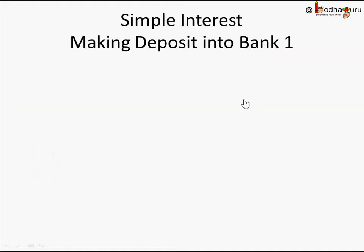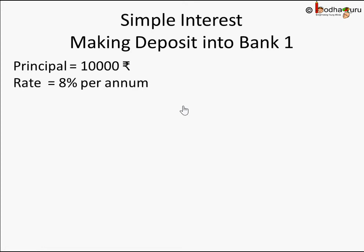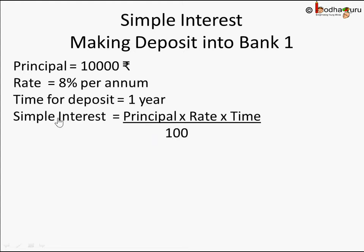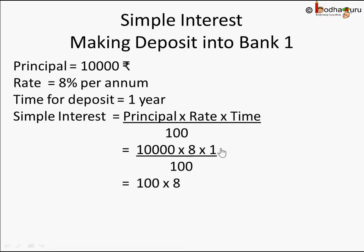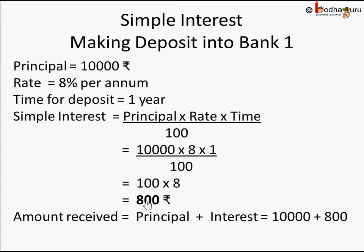Let's find out how much money Sukram gets from Bank 1. The principal is 10,000, the rate is 8% per annum, and the time is 1 year. Using the simple interest formula PRT divided by 100: 10,000 × 8 × 1 ÷ 100. The two zeros cancel, giving 100 × 8, which is 800 rupees. So the bank gives Sukram 800 rupees extra, meaning he receives 10,000 + 800 = 10,800 rupees back from Bank 1 after 1 year.